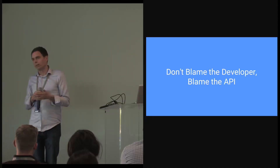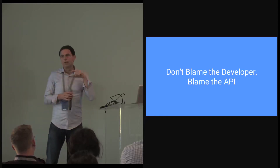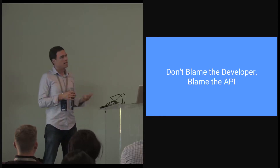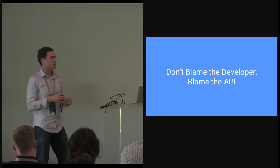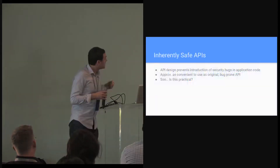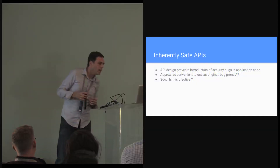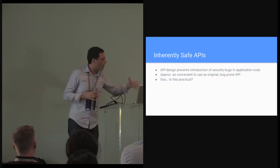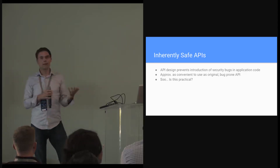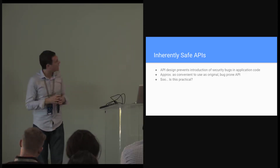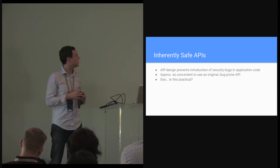That's an unreasonable burden we're placing on the developer and it doesn't work. What we need to do is put the burden on the API and the API's design and implementation to ensure that it's impossible for the developer to make these subtle mistakes as they're using the API. So what we want is what I call inherently safe APIs — APIs that have roughly the same functionality as existing ones, but also have the property that they don't allow the developer to accidentally introduce bugs that result in security vulnerabilities.